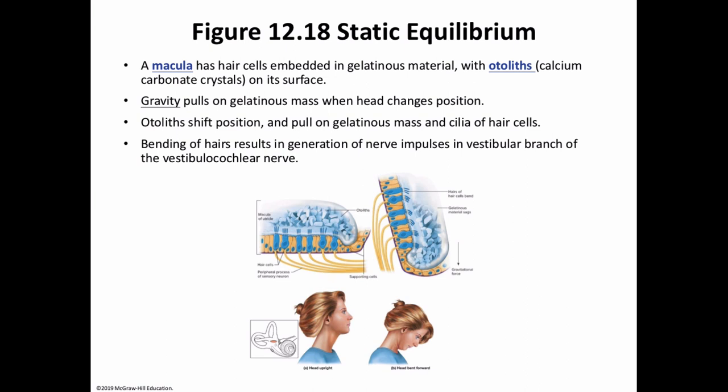Now, dynamic equilibrium involves movement. We have the semicircular canals — three bony semicircular canals that lie at right angles. Within the perilymph of the bony canal is what we call the ampulla. The ampullae communicate with the utricle of the vestibule, and the ampulla has a ridge that crosses the tube. Each of these organs is called the crista ampullaris, which has those sensory hair cells.